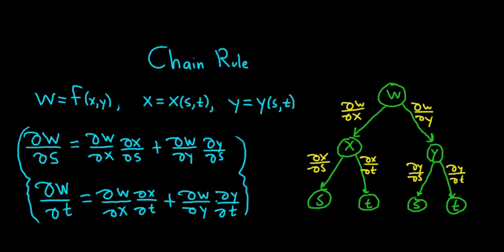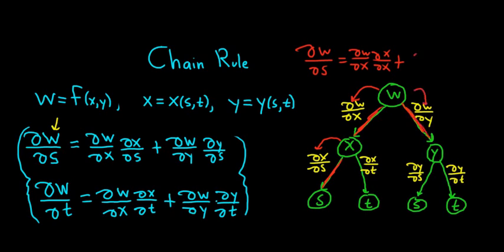It's one of the harder topics for people to understand. Let's write one of them down using the picture. For ∂w/∂s, we need to get to s. One way is ∂w/∂x times ∂x/∂s — going from x down to s. Or, we can first go through y: ∂w/∂y times ∂y/∂s. I usually don't use this picture — I think it's a cool picture, but I just think about it mentally.